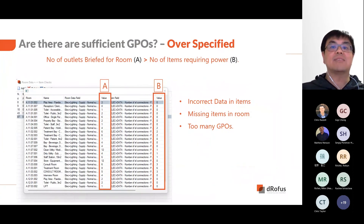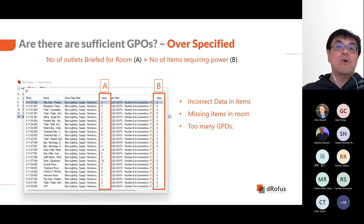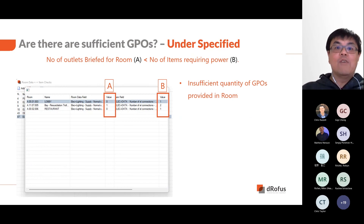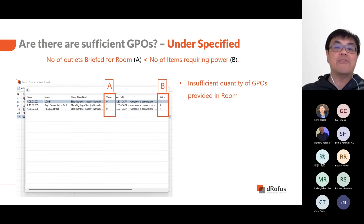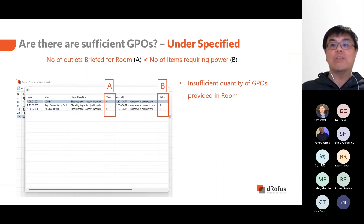If you run the over-specified test, it will identify rooms where the quantity in the room data is more than the quantity identified through the item data. This may be due to insufficient items in the room, incorrect data in the items, or a case of providing too many GPOs in the room. For the under-specified test, the results will show where the quantity in the room data is less than the quantity identified through the item data, indicating more GPOs may be required in those rooms. In both test scenarios, the results may lead to additional coordination within the project team.